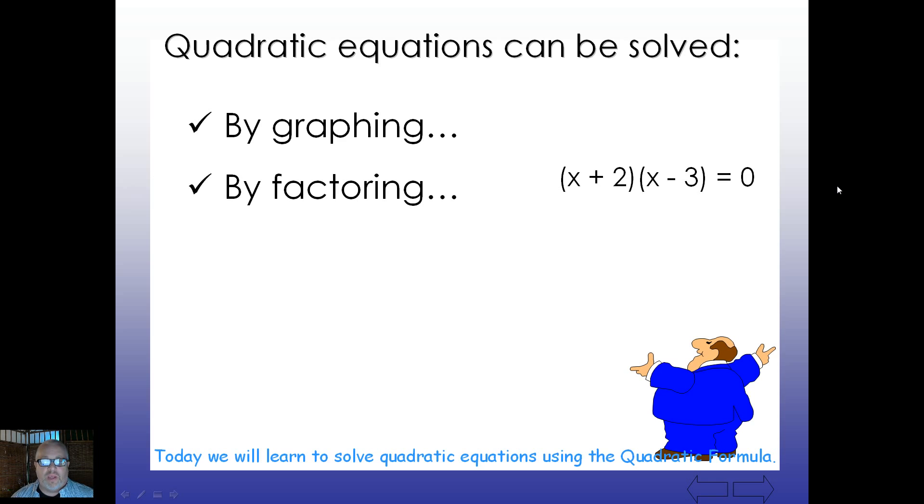We can also solve by factoring, where we had the zero product property. So in this case, the answer would be x is the set negative two and positive three. And we can also solve by completing the square. Completing the square is where we find a c, and we add it to both sides, and then we find a perfect square trinomial.